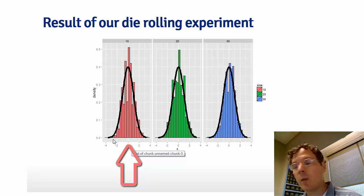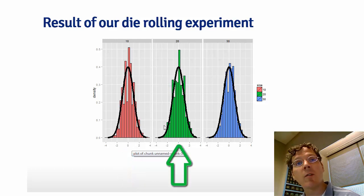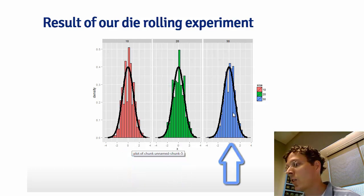However, what the central limit theorem is telling us is also the shape. And the shape has to be like that of a bell curve. And because we normalize the data, it has to be exactly that of a standard normal. And we see that the approximation is actually very good, even for just 10 die rolls. For 20, it gets even better. And for 30, it's better still.